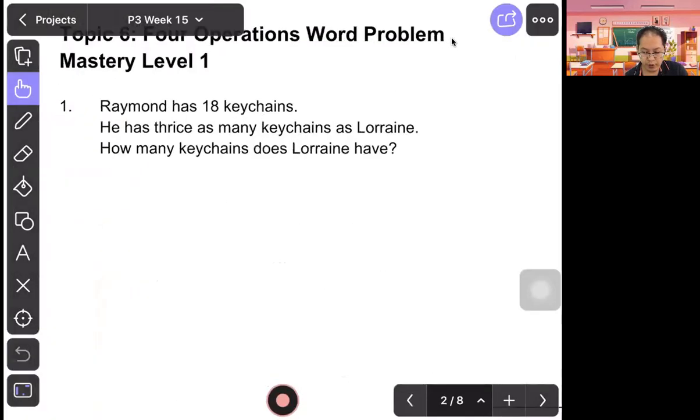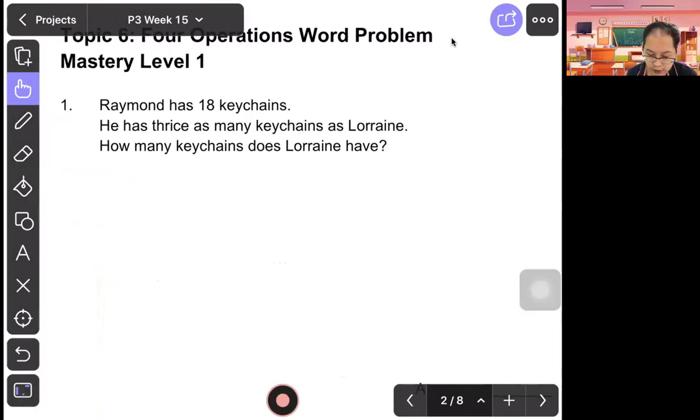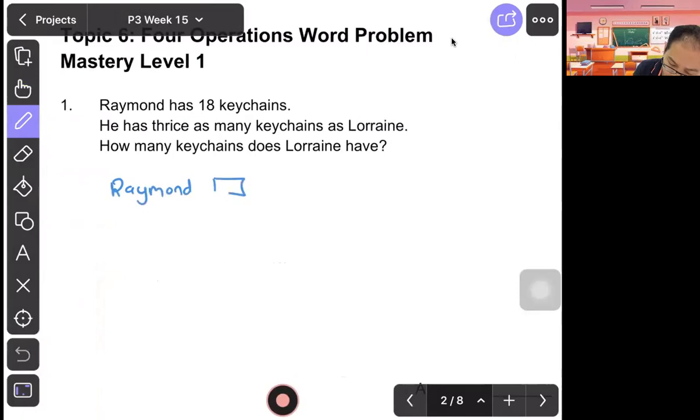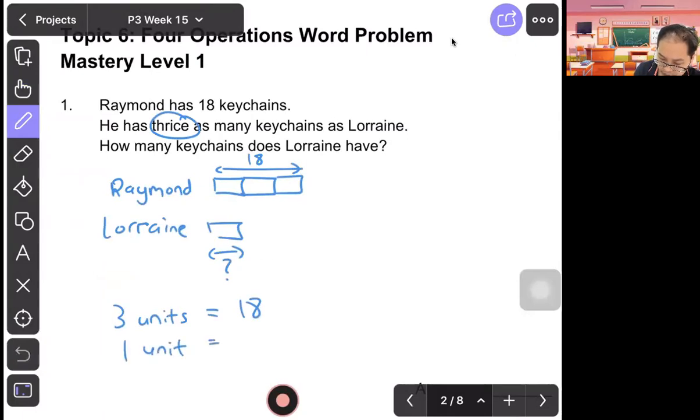Let's look at the question. Number one: Raymond has 18 keychains. He has twice as many keychains as Lorrie. How many keychains does Lorrie have? So let's draw comparison model. Raymond 18. Raymond is three units because thrice. That means Lorrie is one unit. So this is 18, question mark. So three units equal to 18. One unit, we take 18 divided by 3. That will be equal to 6. Answer is 6.